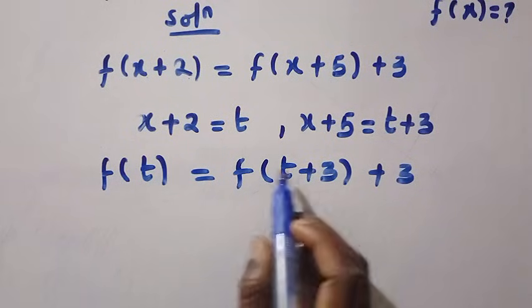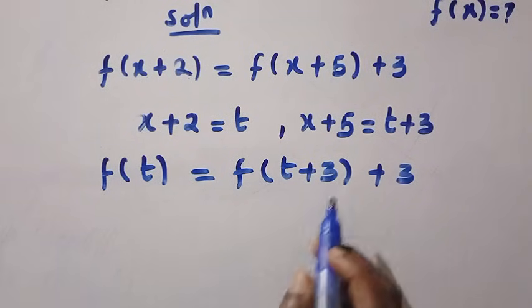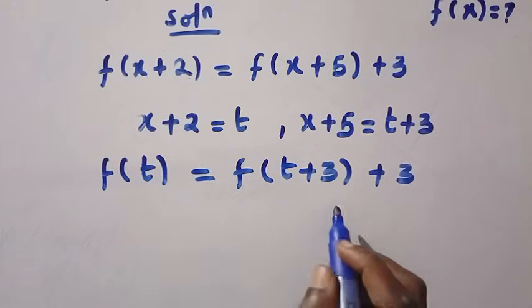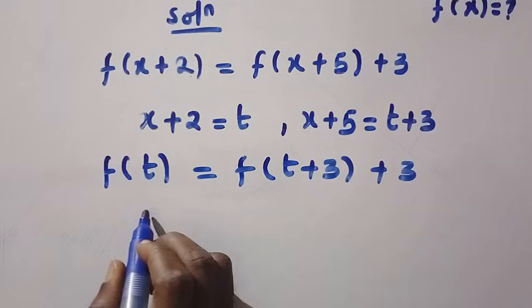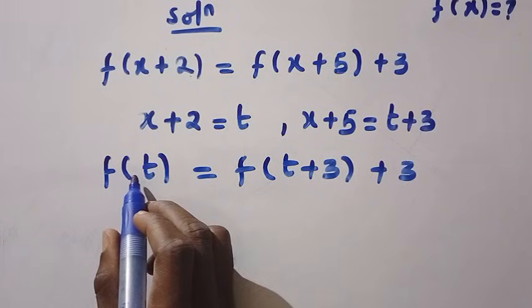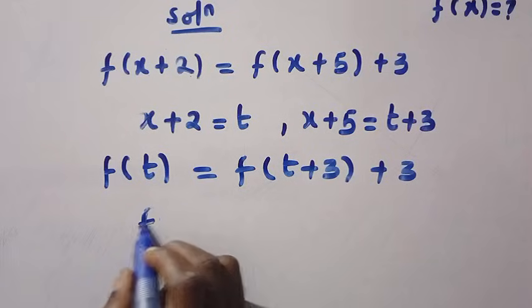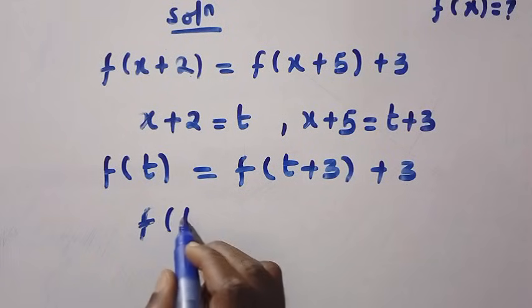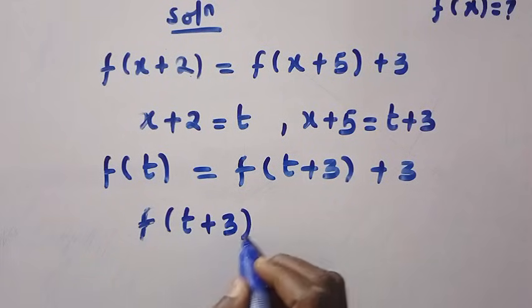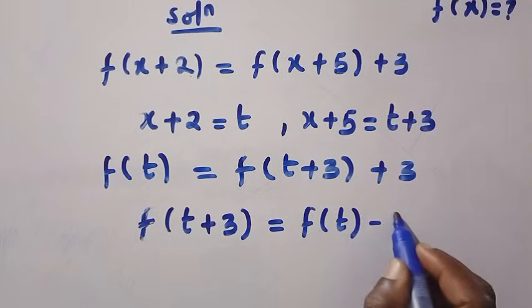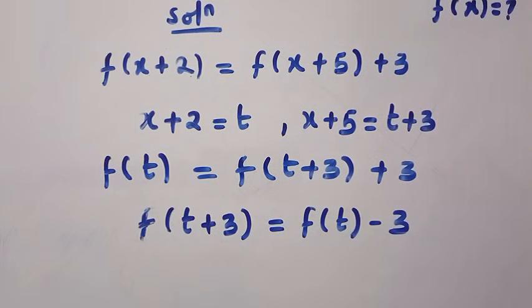I want to make f of t plus 3 to be in the position of f of t. So what I will do is, I will transfer f of t to other side, as we have f of t plus 3 equals f of t minus 3. So this is what we are going to have.